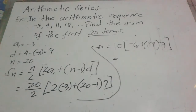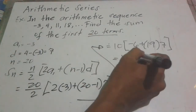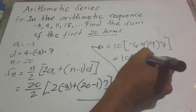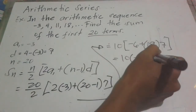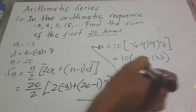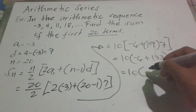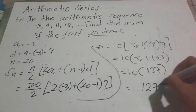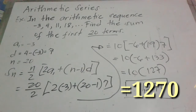So we have 10 times the quantity negative 6 plus 133, since 19 times 7 is 133. Then negative 6 plus 133 is 127. So 10 times 127 is 1,270. The sum of the first 20 terms is 1,270.